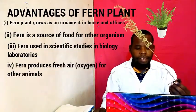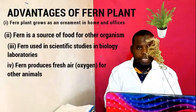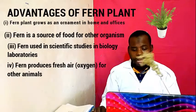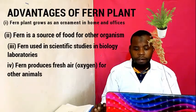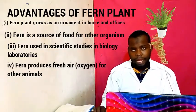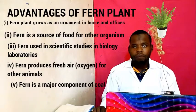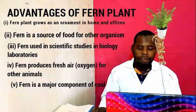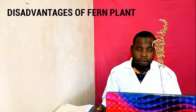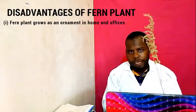Another advantage: Fern Plant produces fresh air. After photosynthesis there is production of oxygen, so the Fern Plant produces oxygen for animals like human beings and other animals. Also, a Fern Plant is a major component of coal. Apart from advantages, a Fern Plant also has disadvantages — it is found as a weed in many places.